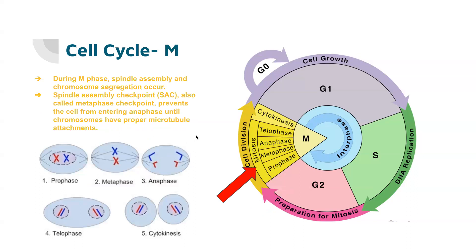Going into the M phase, which is when the cell divides up its chromosomes — spindle assembly and chromosome segregation occur during this phase. We have prophase, metaphase, telophase, and cytokinesis, which we will go further into depth on in the coming weeks. The spindle assembly checkpoint, also called the metaphase checkpoint, basically makes sure that all of the spindles are connected where they should be on the chromosomes so that incorrect segregation doesn't occur. This checkpoint prevents the cell from entering anaphase until the chromosomes have proper microtubule attachments.